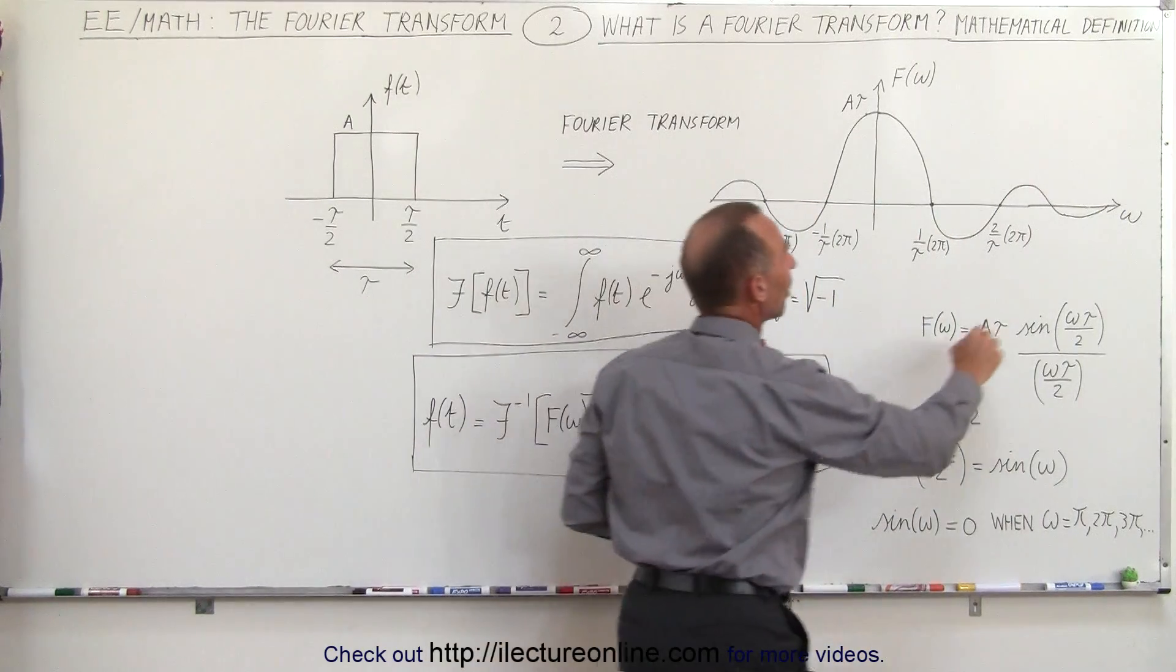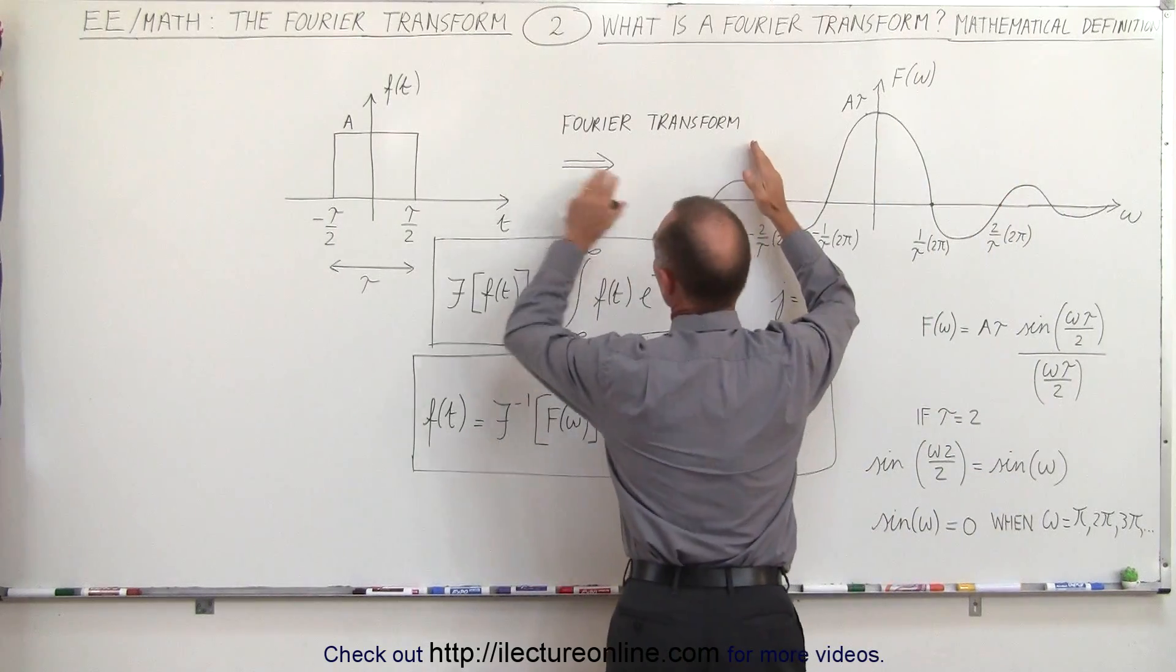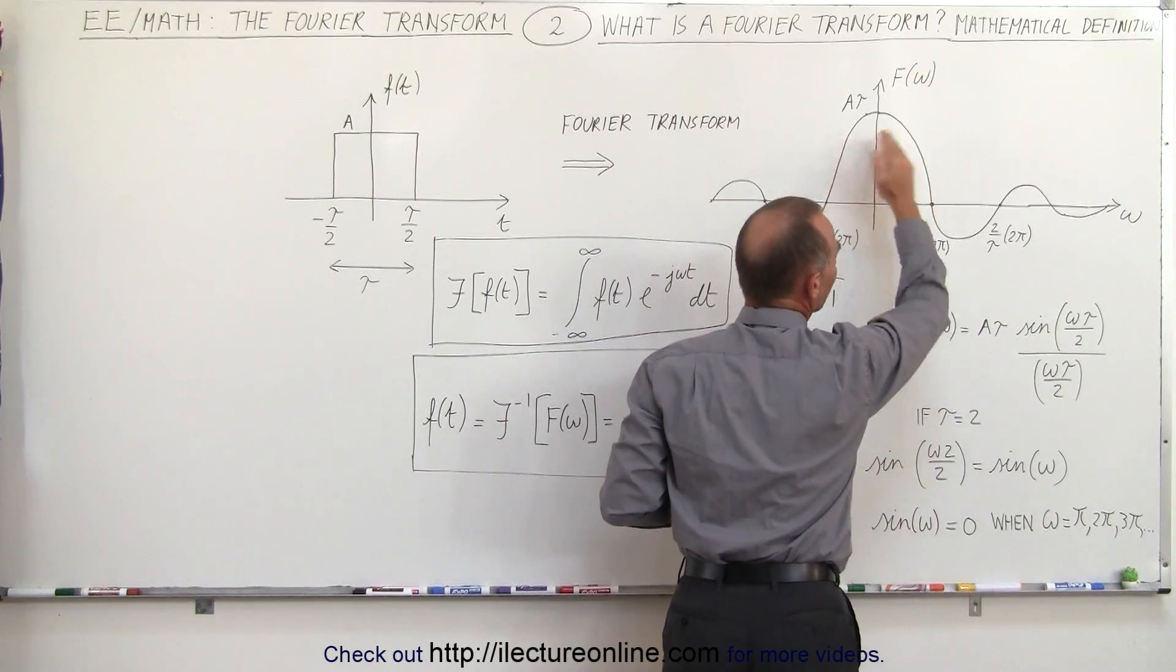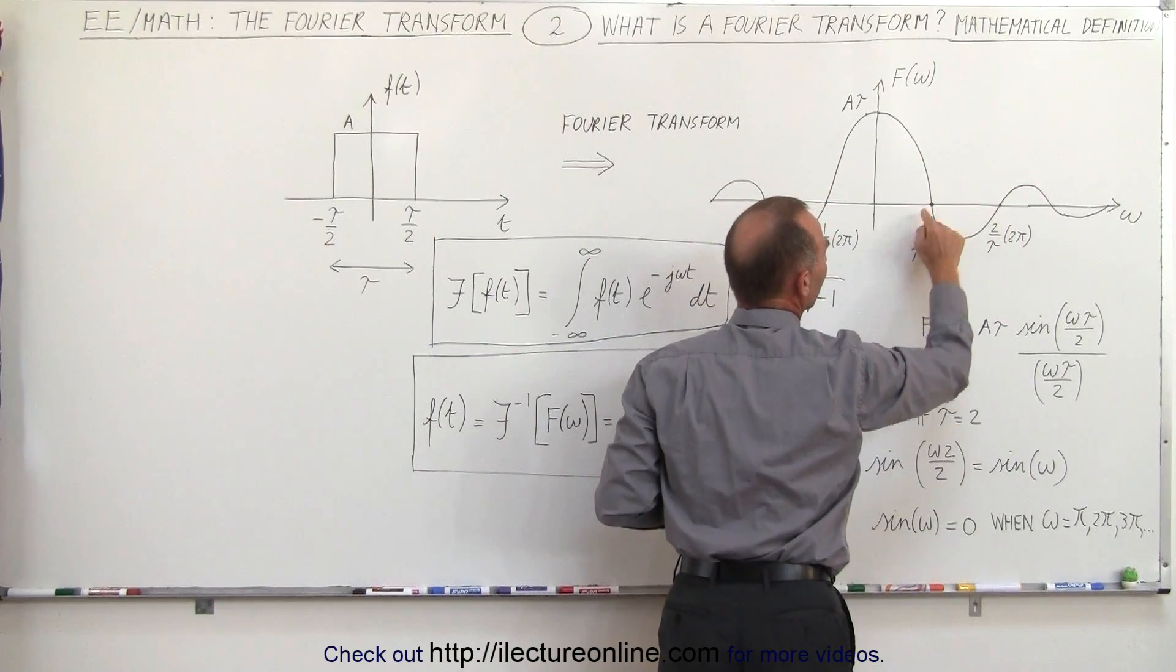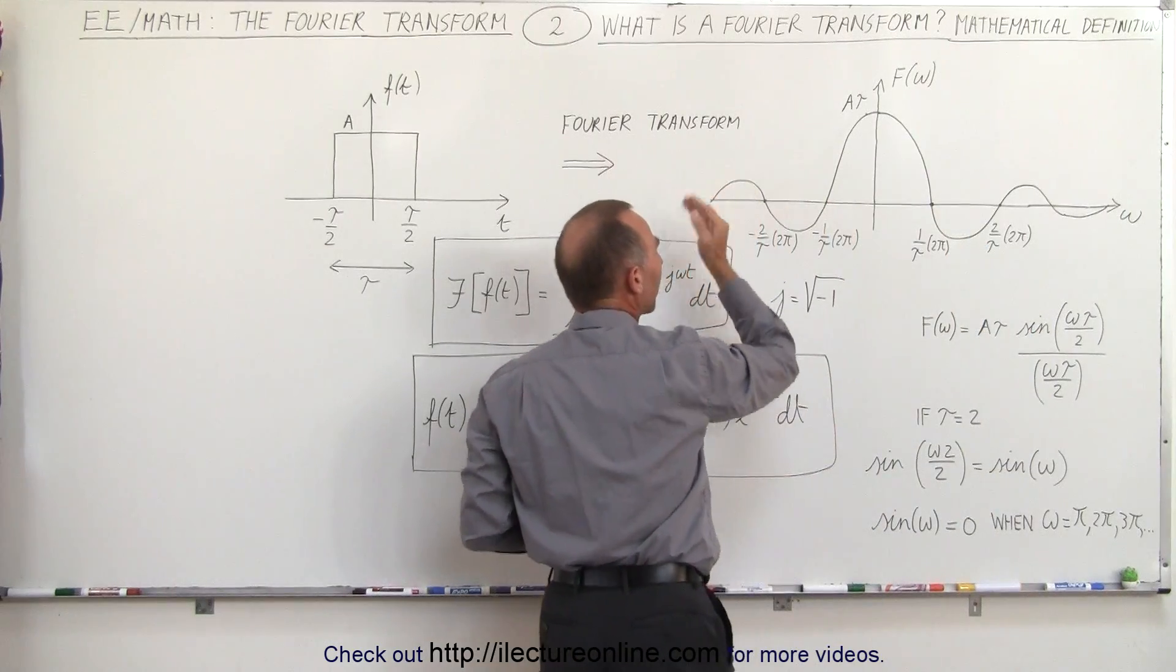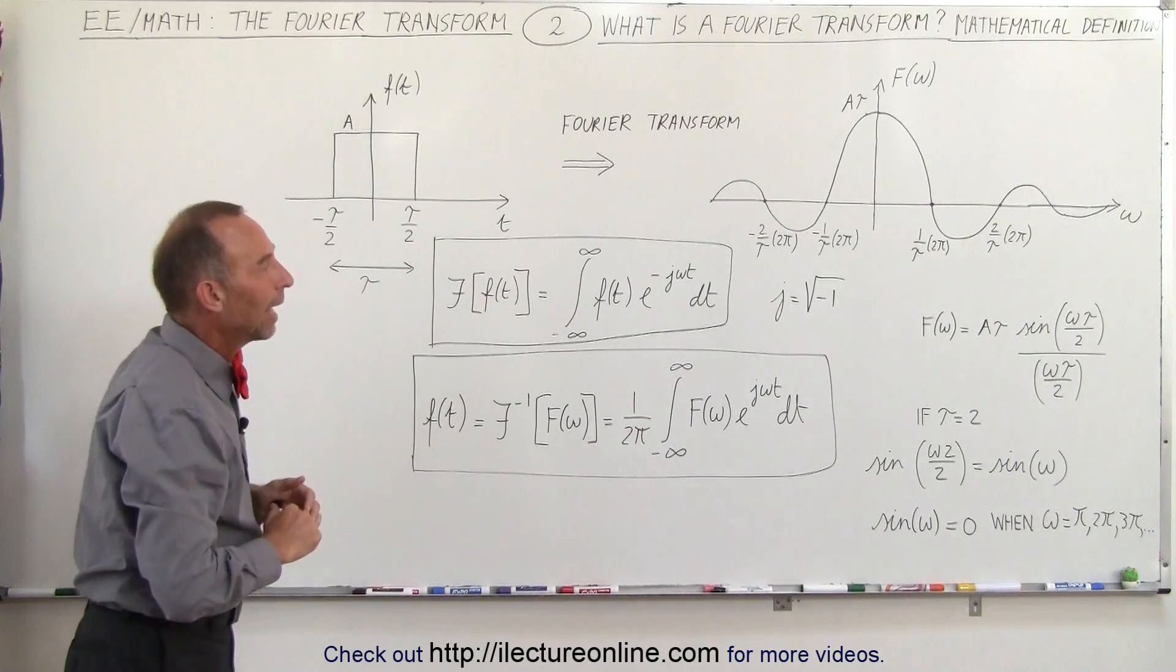And so now you can see what this really means. The frequency at which the function, which is the Fourier transform of the single pulse here, the value of that function equals zero at pi, 2 pi, 3 pi, 4 pi and of course minus pi, minus 2 pi, minus 3 pi. That would be the frequencies at which that happens.